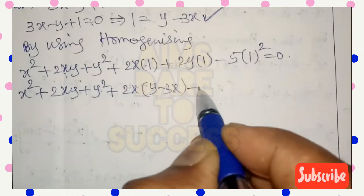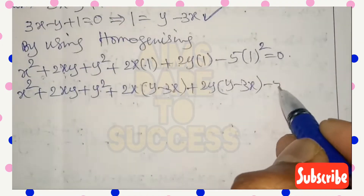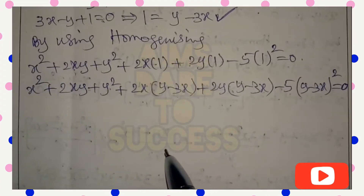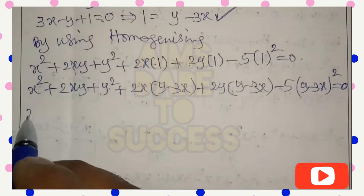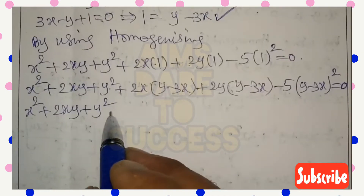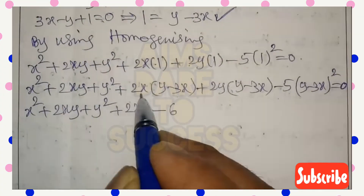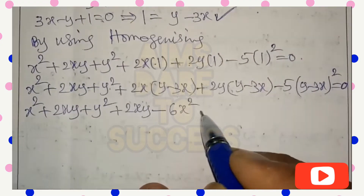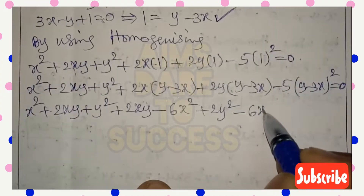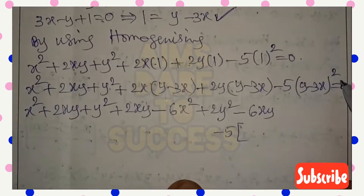Substituting 1 = y - 3x, we get: x² + 2xy + y² + 2x(y - 3x) + 2y(y - 3x) - 5(y - 3x)² = 0. Expanding the brackets: 2x·(y - 3x) gives 2xy - 6x²; 2y·(y - 3x) gives 2y² - 6xy. The last term -5(y - 3x)² uses the (a - b)² formula: a² + b² - 2ab.